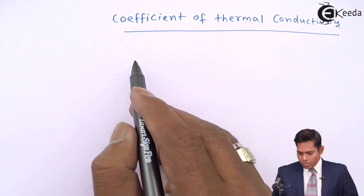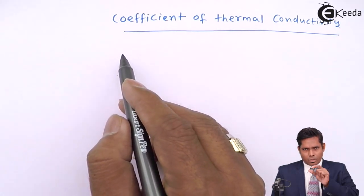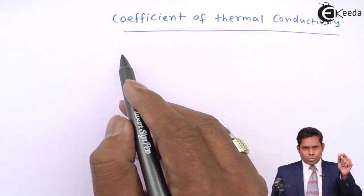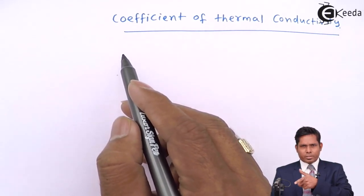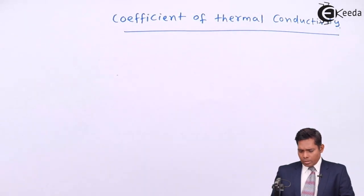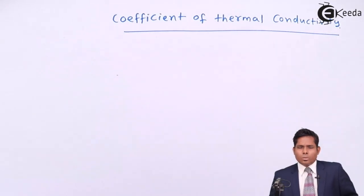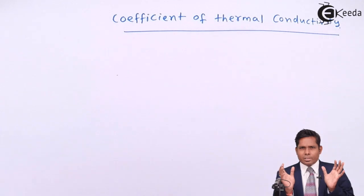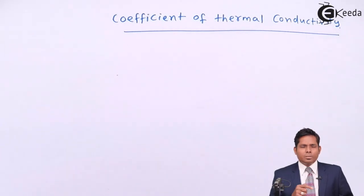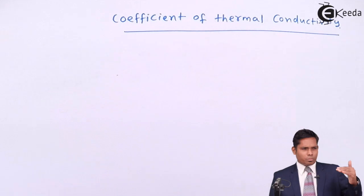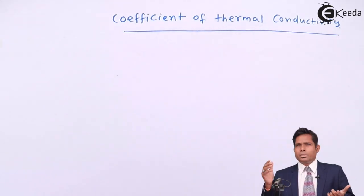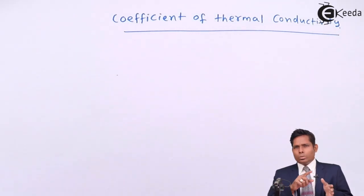Let me draw the diagram and explain. We will consider a rod and maintain different temperatures at the two ends, then allow heat to flow from one end to the other. We need to specify some dimensions of the conductor. The two ends are maintained at temperatures T1 and T2, and since heat flows from higher to lower temperature, one end must have a higher temperature.